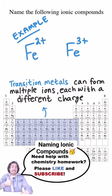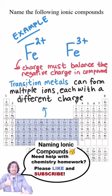Transition metals can form multiple ions, each with a different positive charge. But the charge of the transition metal ions will always need to add with the negative charge to equal zero.